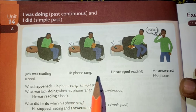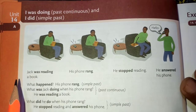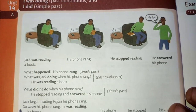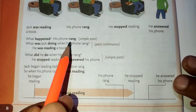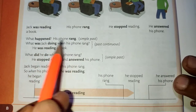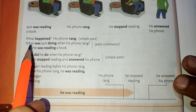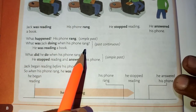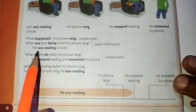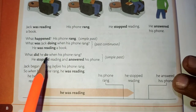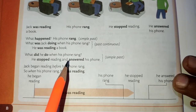Those three example sentences belong to simple past and this one is in past continuous. Here we have more example sentences and explanations. What happened? His phone rang — this is in simple past. What was Jack doing when his phone rang? — this is in past continuous. He was reading a book. What did he do when his phone rang? He stopped reading and answered his phone — these are in simple past.